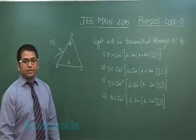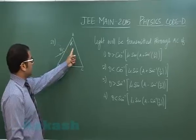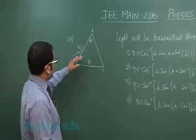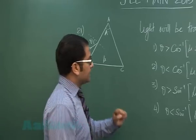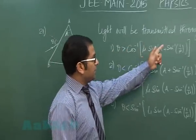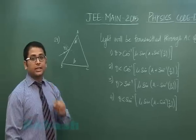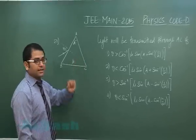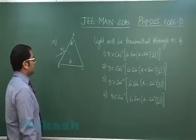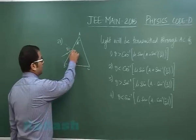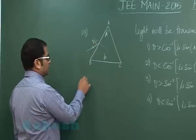Question number 21 is from ray optics, prism given with angle of prism A, refractive index mu, and angle of incidence in the first phase is theta. It says light will be transmitted through AC, that means I do not want total internal reflection to happen in AC, and for that the condition is required. I'll take the usual notation R1, the inner angle here, R2, the inner angle here.